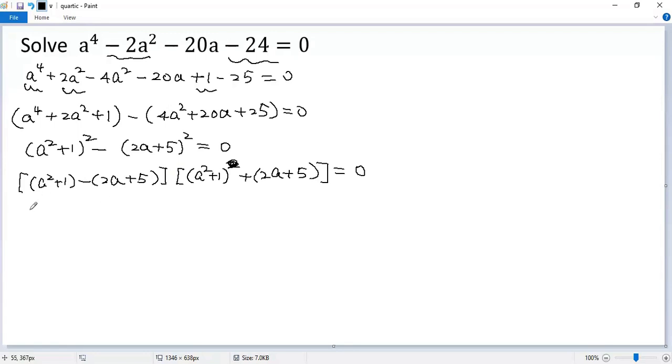So we get the first factor equals 0, which is a squared minus 2a minus 4 equals 0, denoted as equation 1, or the second factor equals 0, which is a squared plus 2a plus 6 equals 0.